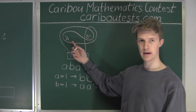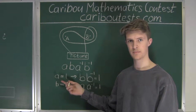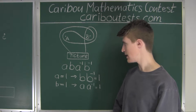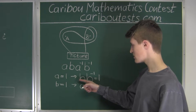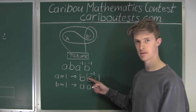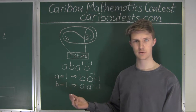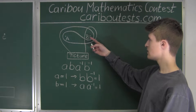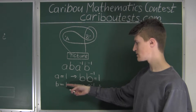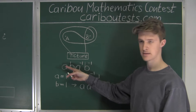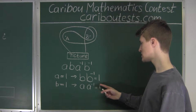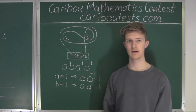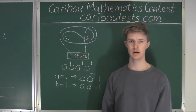Pulling nail A is equivalent to setting A equals 1, because it is like there is no string wrapping around that nail at all. After setting A equals 1, this leads to B times B to the power of negative 1, which equals 1 — meaning the picture falls down. Likewise, for pulling nail B, we set B equals 1 and get A times A to the power of negative 1, which equals 1, meaning the picture would fall down. This technique is faster, more elegant, and doesn't require redrawing.